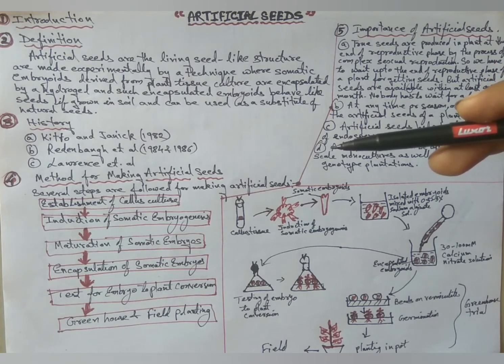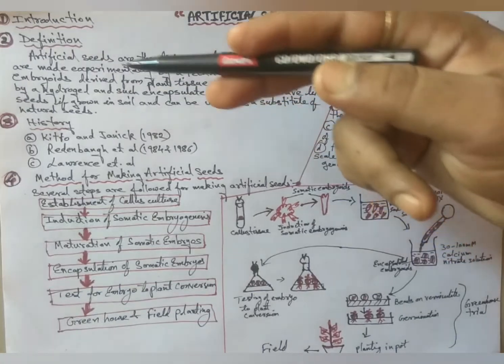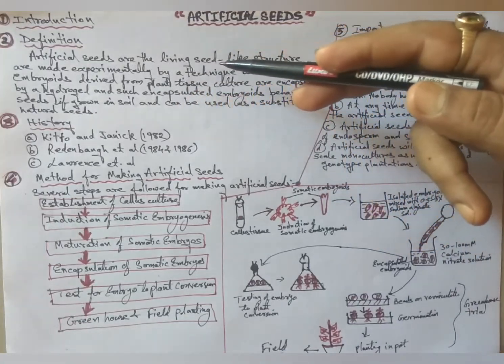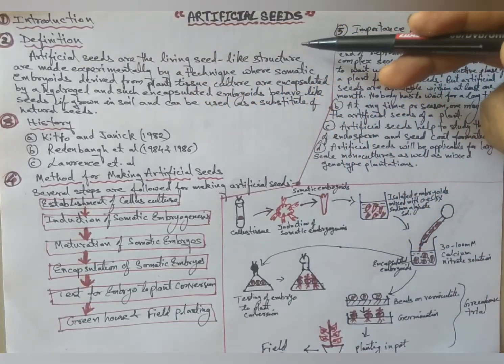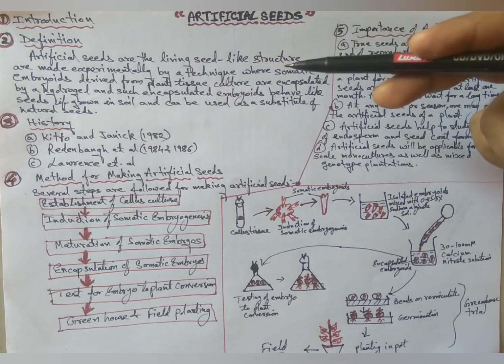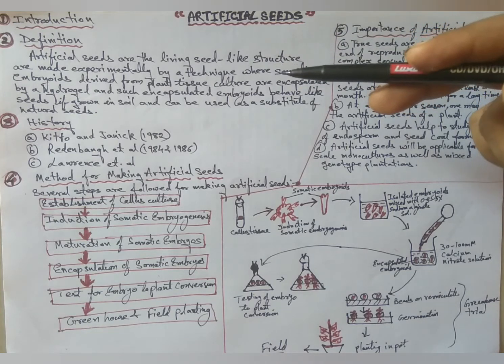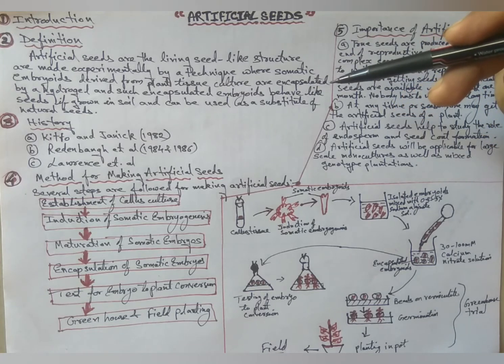Such encapsulated embryos could be used as artificial seeds. Definition of artificial seeds: Artificial seeds are living seed-like structures made experimentally by a technique where somatic embryos derived from plant tissue culture are encapsulated by a hydrogel.